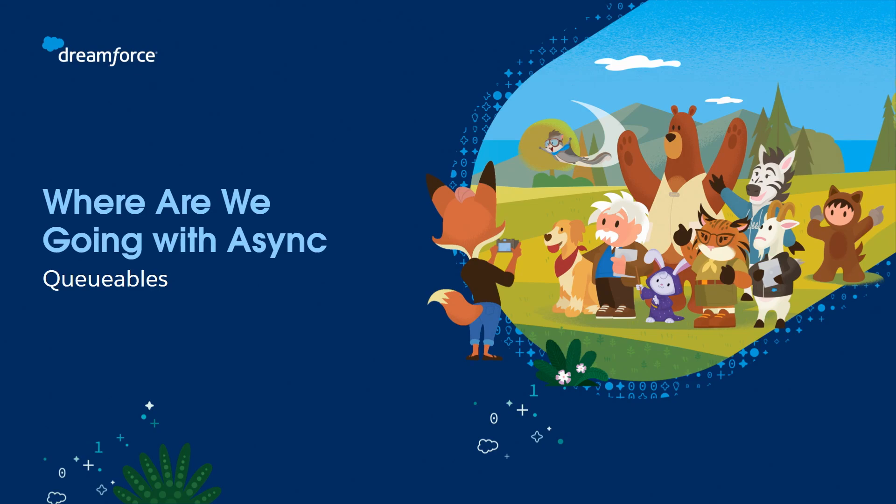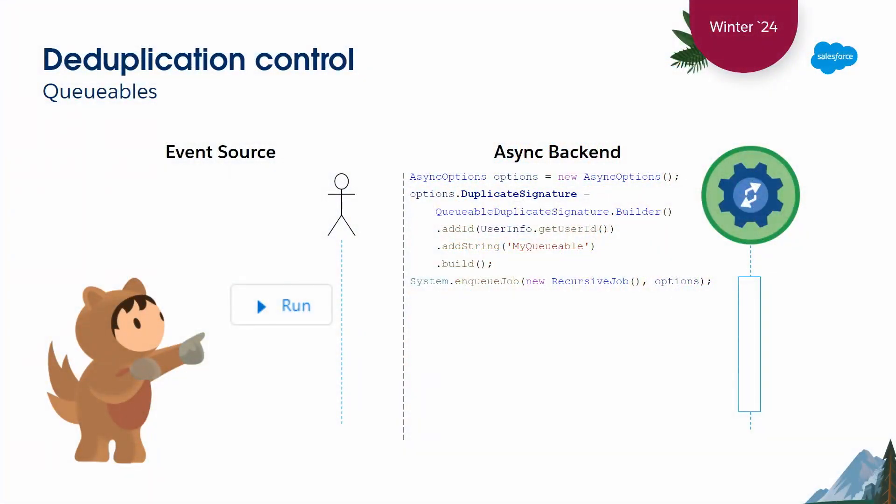Let's look at where we're going with queueable processing for asynchronous jobs. We've done a number of improvements recently to queueable jobs, including depth control, which can help you prevent runaway jobs.